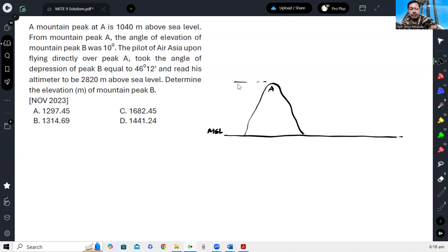According to the problem, its elevation is 1,040. And then we have another mountain, B. So the question now is, is B higher or lower than A?